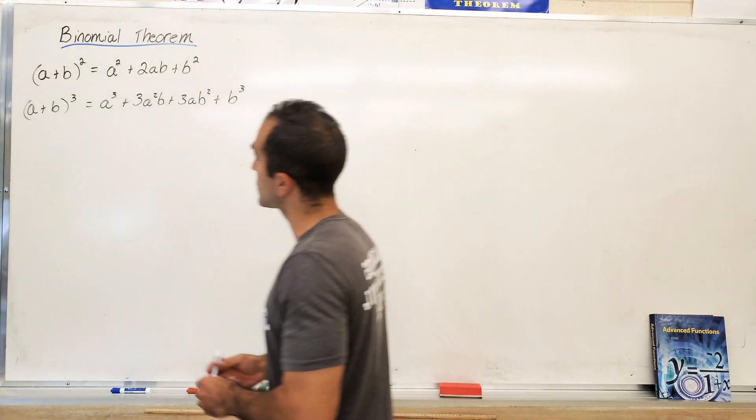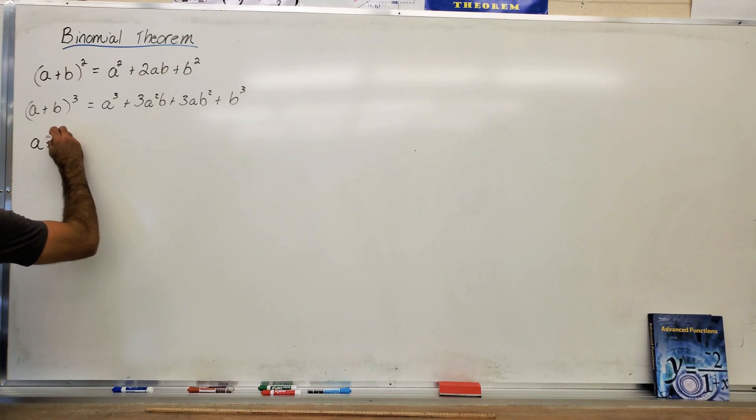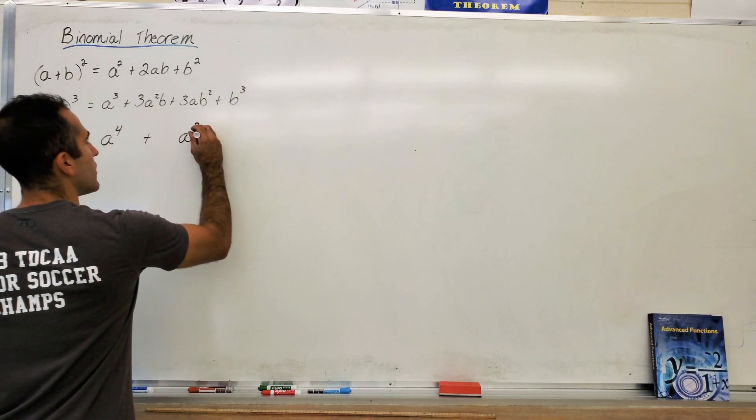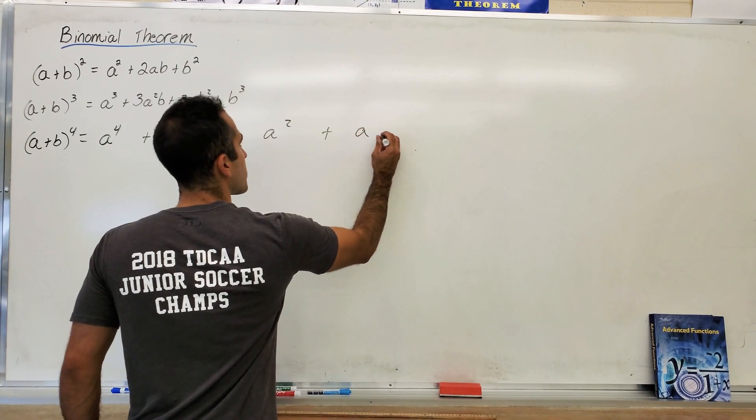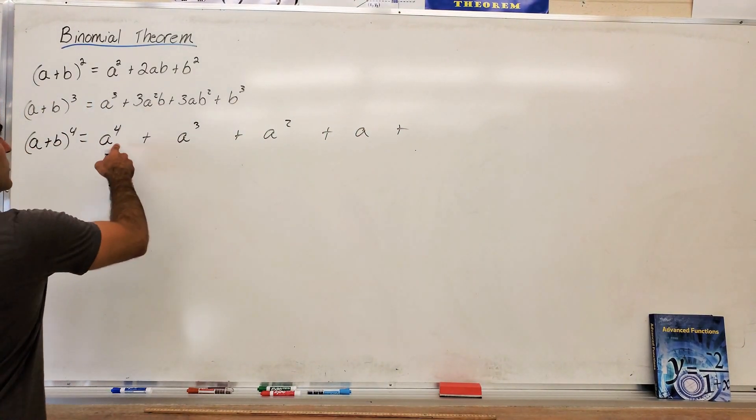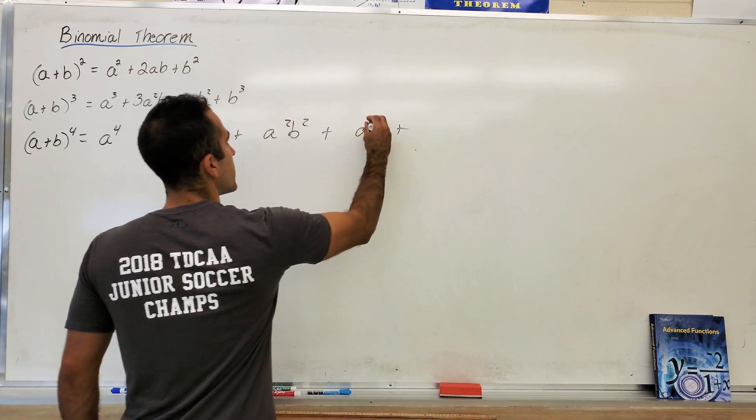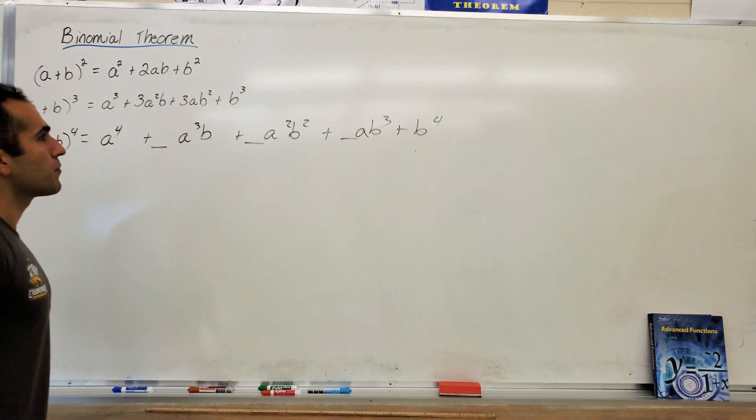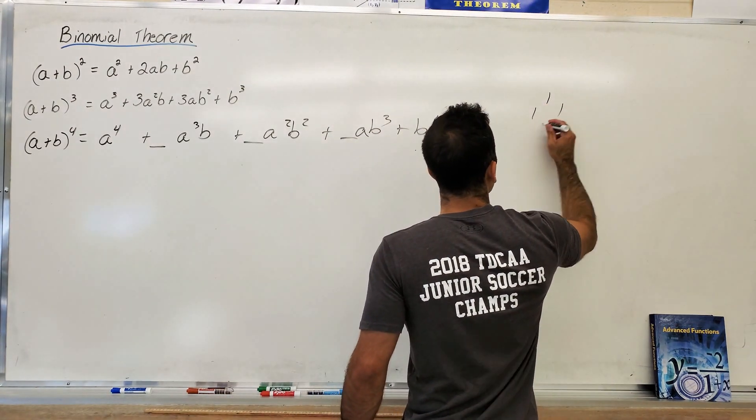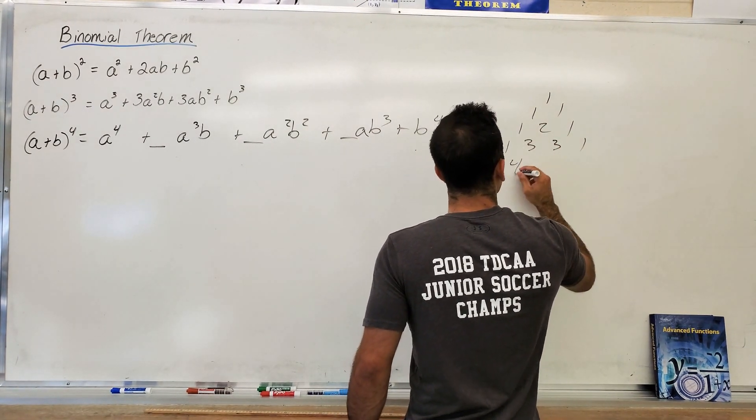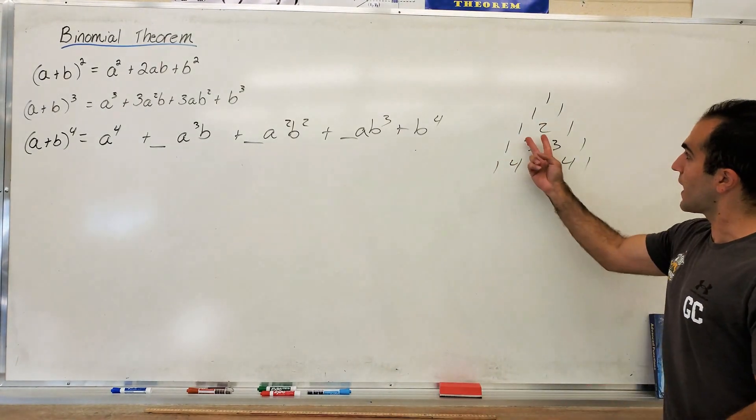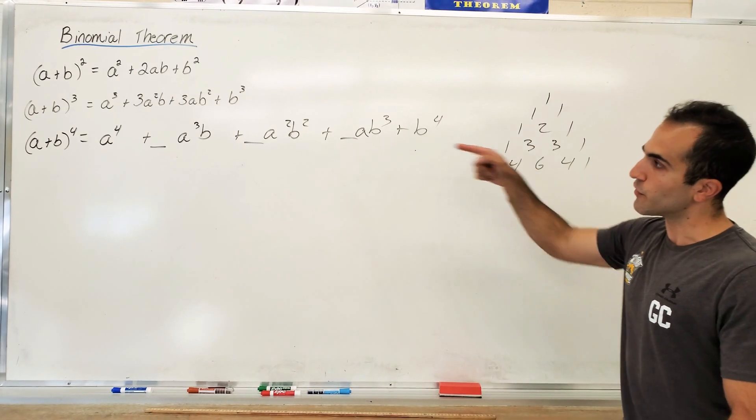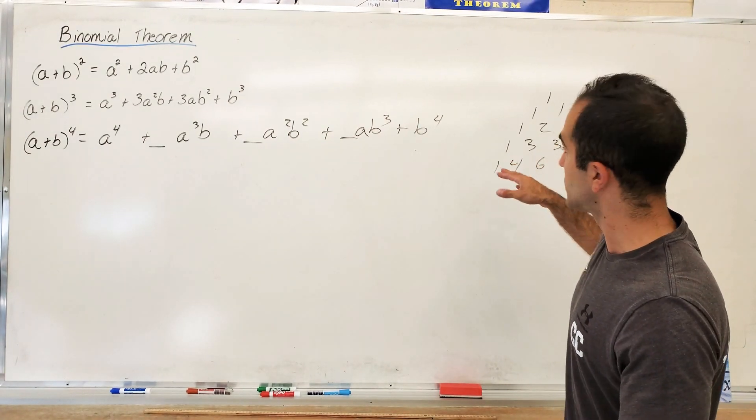Okay, now if I want (a+b)⁴, try to follow along with me now. The a's start with the highest power. Watch, I'm just going to create a skeleton. My a's are done. Let me do the b's: no b, b, b², b³, b⁴. Now I need the coefficients in front of these guys. And in Pascal's triangle, if you ever build Pascal's triangle, just add the numbers and draw the number underneath. So 1 plus 2 is 3, 1 plus 3 is 4, 3 plus 3 is 6. These are the coefficients that go in front of all your terms in the binomial theorem.